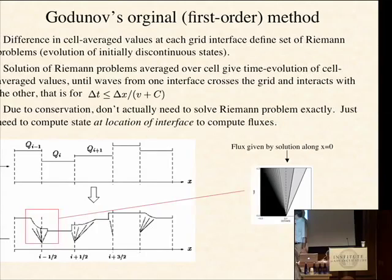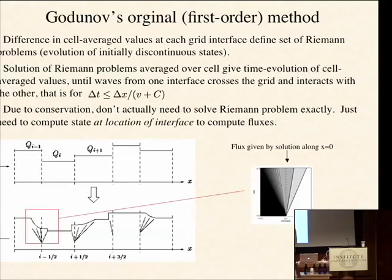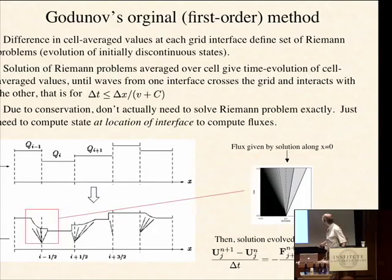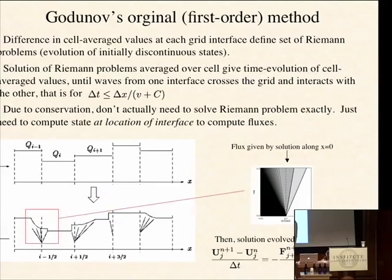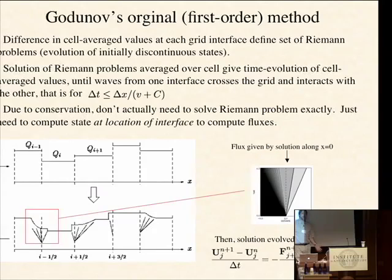In a space-time diagram, an initial discontinuity launches a shock wave, a contact discontinuity, and a rarefaction fan. But you really only need the solution along x equals zero — along the dashed line — because if you know that state you can calculate the flux: rho*vx for mass, rho*vx² for momentum, and so on. You can then update the cell-averaged values using the conservation laws. A Riemann solver calculates the time-average state at the interface; if you know that, you can calculate the time-average fluxes and integrate forward in time. That's the basic concept of how the Godunov scheme uses Riemann solvers to compute fluxes.